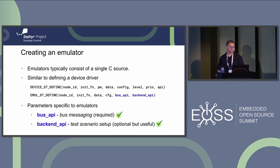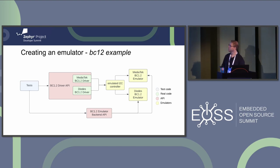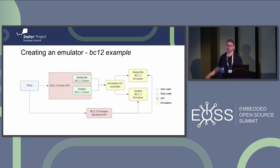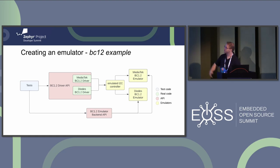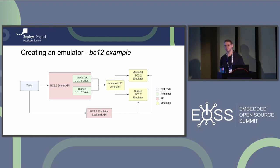This graph shows both APIs at work together. A test talks to a driver API, and based on the device tree, it either uses a MediaTek driver with a MediaTek emulator, or a Diodes driver with its associated emulator — same test code, different device tree. The driver and emulator are both specific to the peripheral, so they're coupled. Both share the same backend API. You can have multiple test executions with different device tree overlays without changing any test source code.